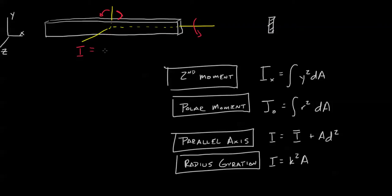This inertia right here, when something is spinning, is called the mass moment of inertia.